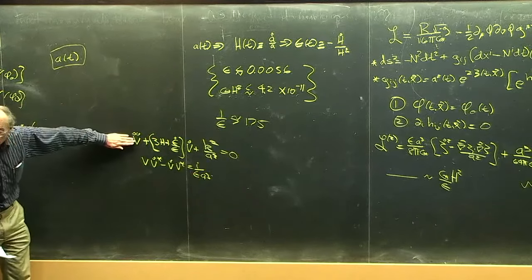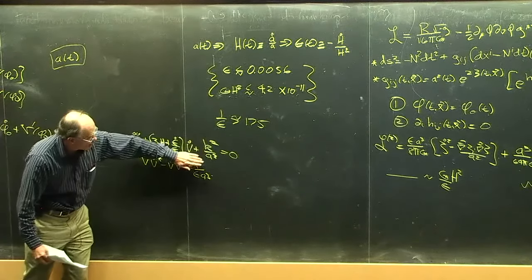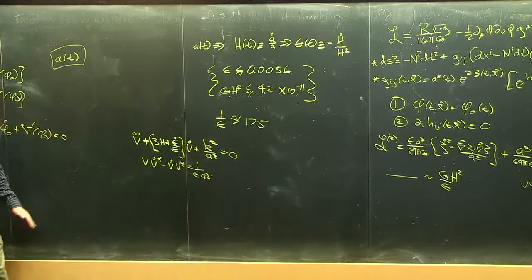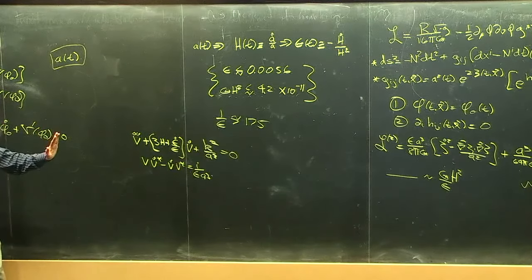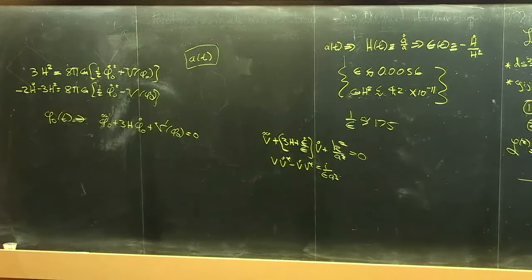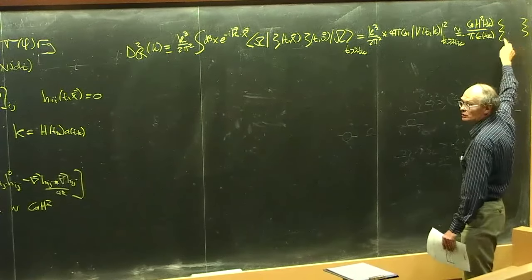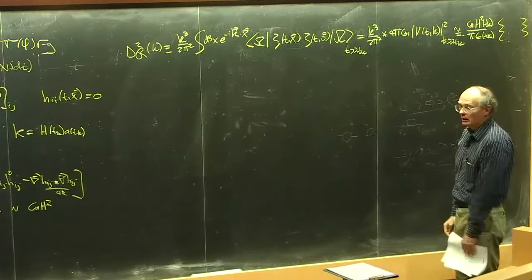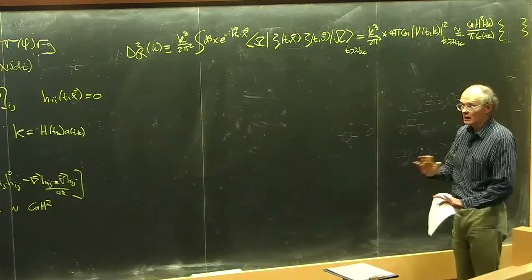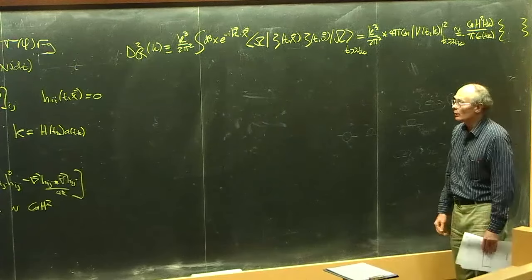We would evolve from the known Hadamard form in the far ultraviolet — when k-squared is much greater than H-squared A-squared — past horizon crossing, then plug into the formula. It's doing that for explicit expansion histories that tells us there must be corrections. We can get it numerically, but we cannot get exact tree-order calculations. That's embarrassing, but true.